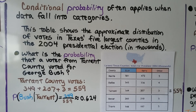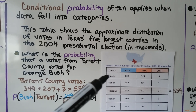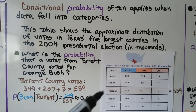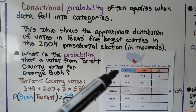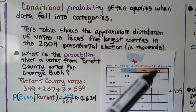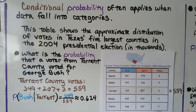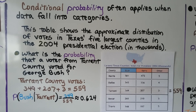Looking at this table, we have five counties: Harris, Dallas, Tarrant, Bexar, and Travis. We have our candidates Bush and Kerry, and other — the other represents people who voted for an independent candidate rather than Bush or Kerry.